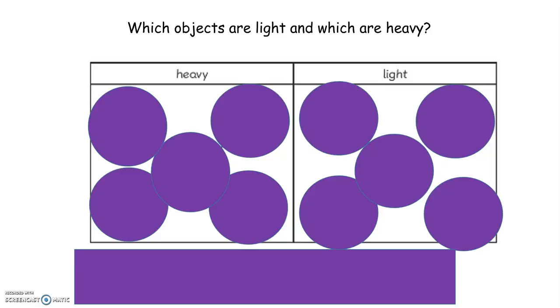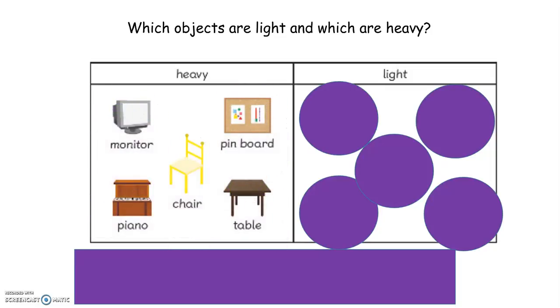Which objects are heavy? Let's have a look. We have the computer screen, the chair, the pin board, the table, and the piano. Did you get those right?